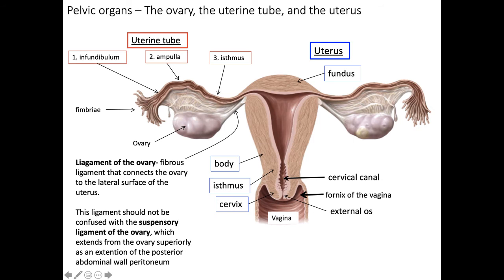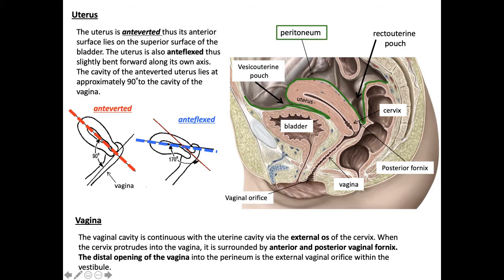Now we're going to take a look at the uterus. We have the fundus on the posterior surface, moving inferiorly to the body, the isthmus, and most inferiorly the cervix. The cervix extends down into the vagina and has fornices around the opening of the cervix into the vagina. The uterus lies on top of the bladder and is anteverted and anteflexed in relation to the bladder. The anteverted uterus means the long axis of the whole uterus is bent forward relative to the long axis of the vagina. The anteflexed uterus means the long axis of the body is bent forward relative to the long axis of the cervix. The vagina heads in a superior and posterior direction, is continuous with the uterine cavity, and also has a distal opening into the perineum.